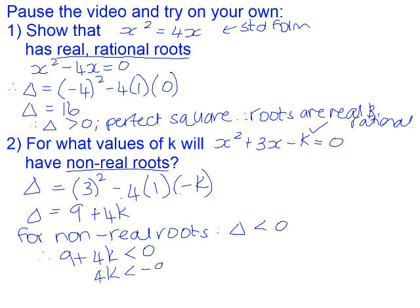So 4k will be less than -9, and if we divide both sides by 4, k will be less than -9 over 4. So in other words, so long as the value of k is a number smaller than -9 over 4, the equation as a whole will have non-real roots.